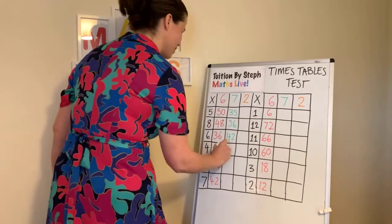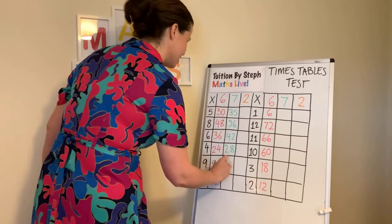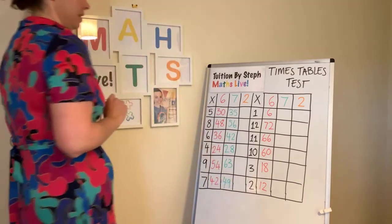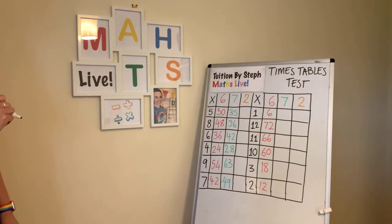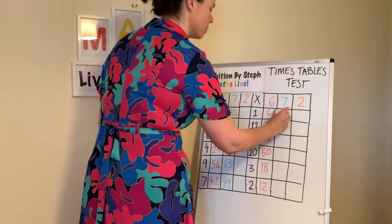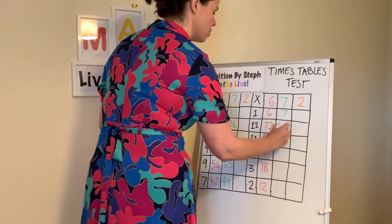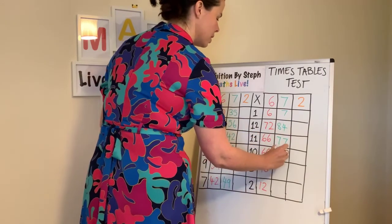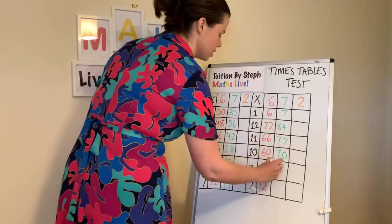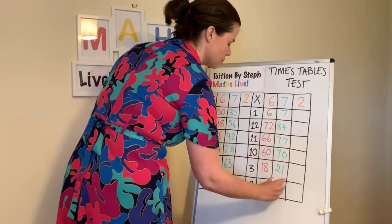Seven fours, 28. Nine sevens, 63. Seven sevens, 49. That's what we have so far. One seven, seven. Twelve sevens, 84. Eleven sevens, 77. Ten sevens are 70. Three sevens, 21. And two sevens are 14.